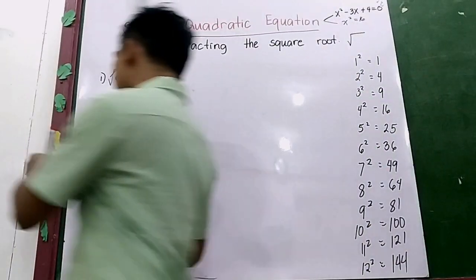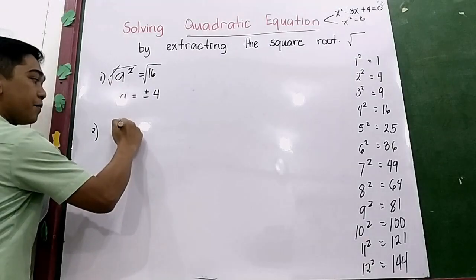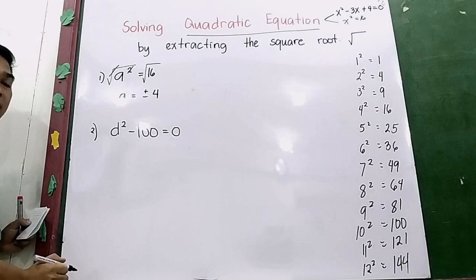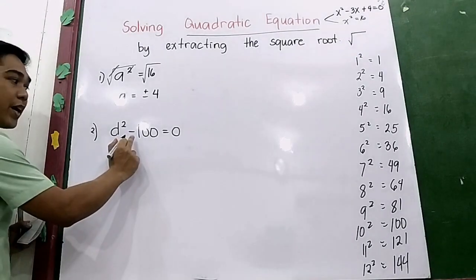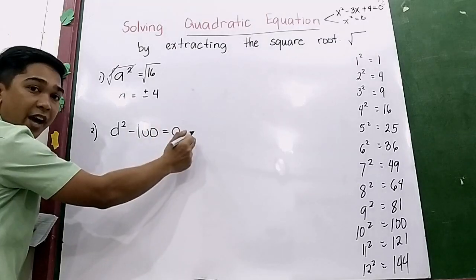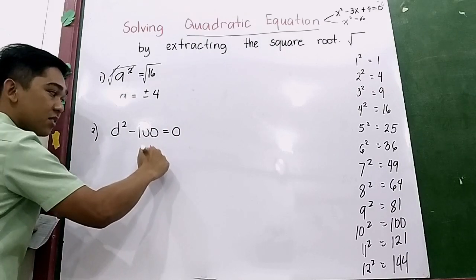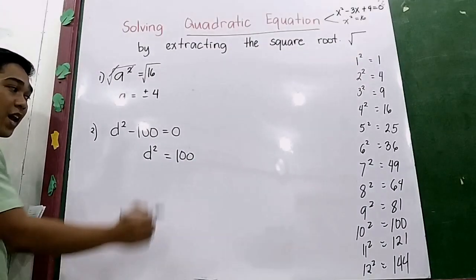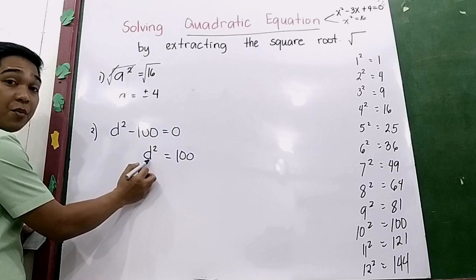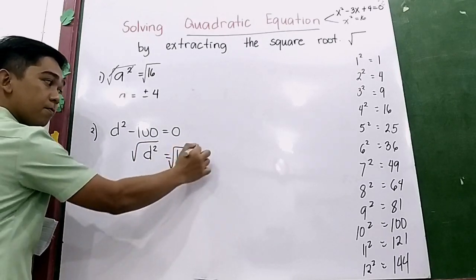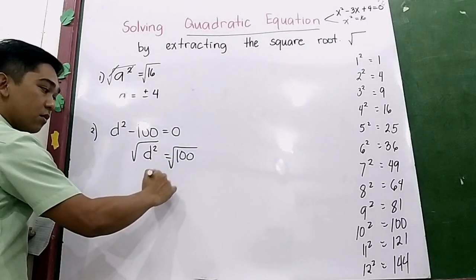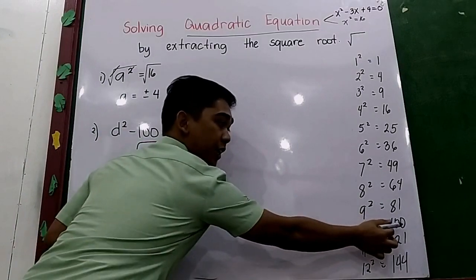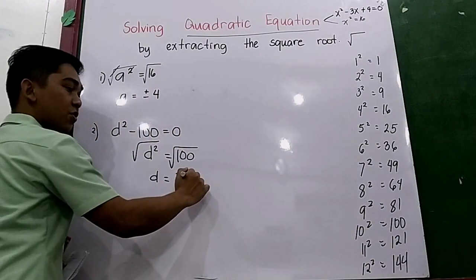Let's proceed to example number 2: d squared minus 100 is equal to 0. We can transpose negative 100 to the right side, giving us d squared is equal to 100. Now we extract the square root to find the value of the variable. So d is equal to plus or minus the square root of 100, which is plus or minus 10.